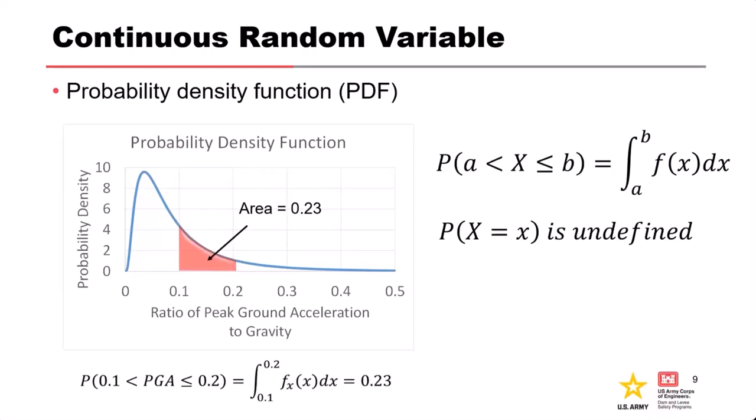By definition, when you have a continuous random variable, the probability of the random variable being a specific value is not defined — there is no probability. So if you ask what's the probability that PGA equals exactly 0.1, that question does not have an answer. It does not exist in the world of probability.